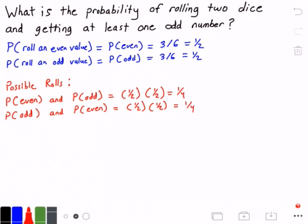Next, we can roll two odd values. So that would be the probability of the first die being an odd number or odd value and the probability of the second die being an odd number or odd value. And so this gives us 1 half times 1 half, which equals 1 fourth.